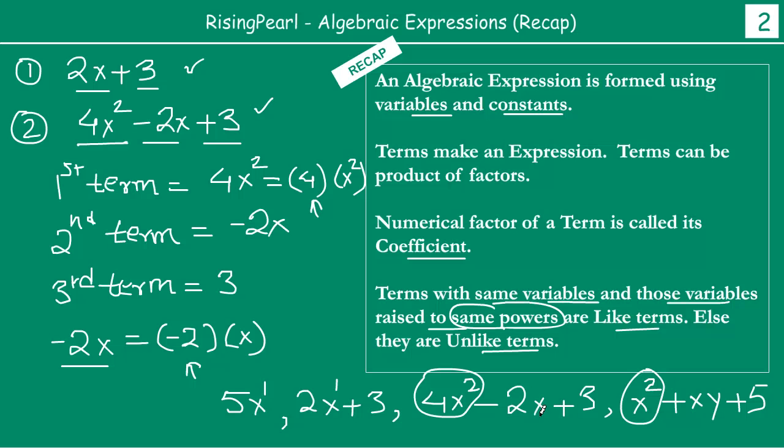And if you look here in this example, minus 2x and plus xy are unlike terms because here either the variable is not the same or the variable is raised to a different power. So hopefully you are able to understand what like terms are and what unlike terms are.